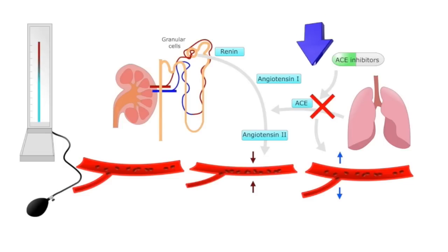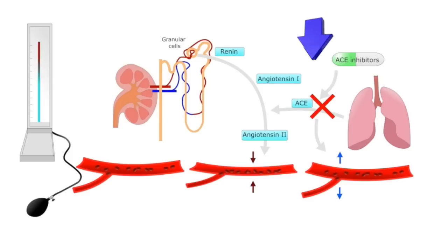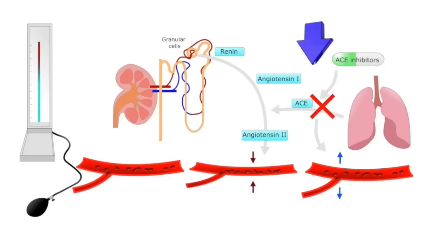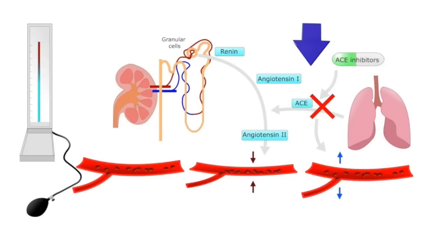ACE inhibitors reduce the impact of the renin-angiotensin-aldosterone system, or RAAS, on blood pressure by inhibiting the angiotensin converting enzyme. As a result, the conversion of angiotensin 1 to angiotensin 2 is slowed down, bringing about several changes in the cardiovascular system. The rate of water reabsorption in the kidney drops, blood volume decreases, and the blood vessels relax and become dilated. Both of these factors reduce the workload on the heart, reducing blood pressure and enhancing the heart's capacity.